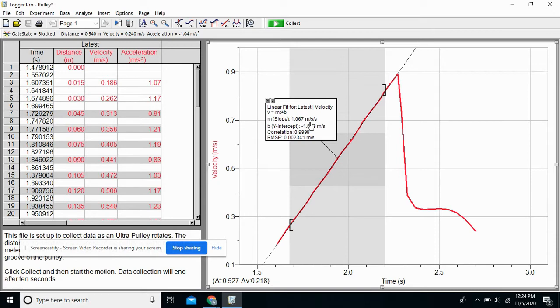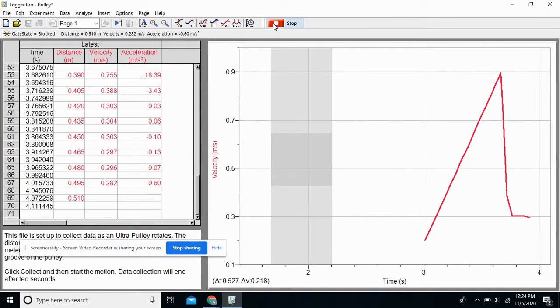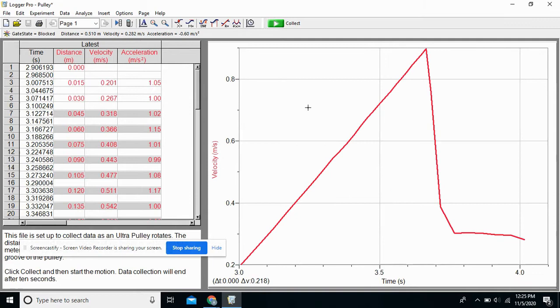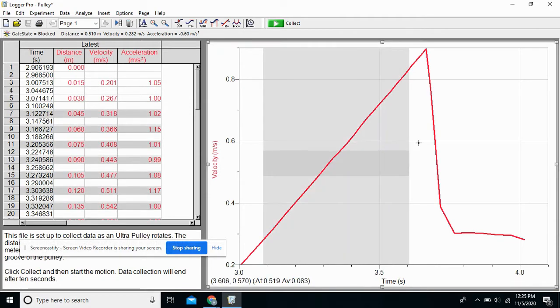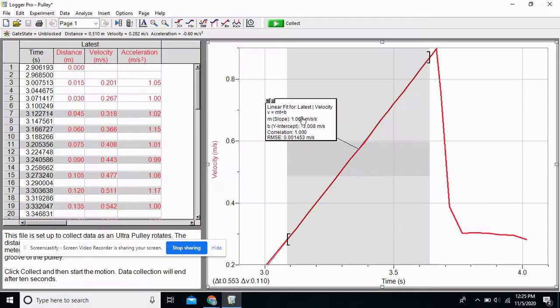Now it doesn't cost me any money to do these trials. This is good stuff. Go to collect. Waiting for data. Hit stop. Control J. Again, a beautiful linear relationship. Now some of you may be noticing that the final velocity is not the same. However, because I'm starting it at different places, I got 1.065. Boy, that's almost identical.